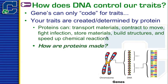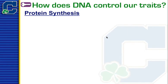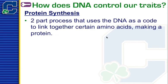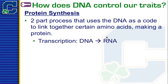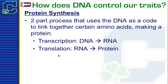So how exactly are proteins made? They're made during protein synthesis, which is a two-part process that uses DNA as a code to link together amino acids. Amino acids are the building blocks of proteins, so if I link together certain amino acids in a certain order, I get a protein that makes up your insulin or gives you your blonde hair or brown eyes. The two parts are transcription — making RNA from DNA, so we go from DNA to RNA — and translation, which is when we take that RNA and change it into a protein.